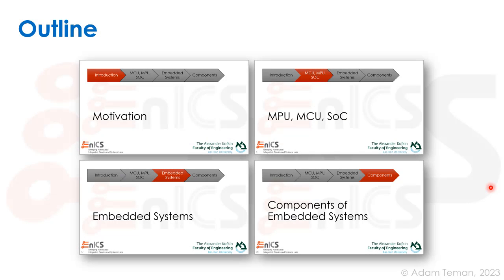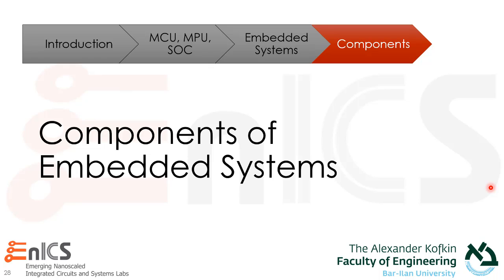After understanding what an embedded system is and the difference between a general computing system and an embedded system, let's go over the components of embedded systems. The things I'm talking about in this course are not only about embedded systems, but about computing in general. Since most of the systems we have are embedded, I'm going to use embedded systems as an example, and then go over things found in higher-end CPUs or embedded systems in certain places in the course.